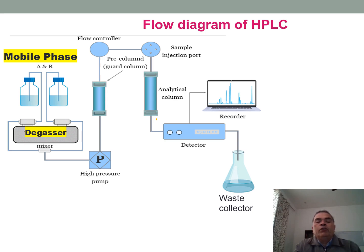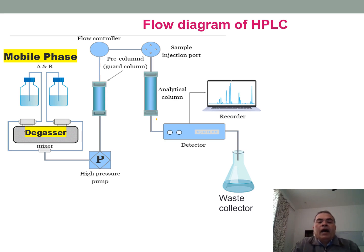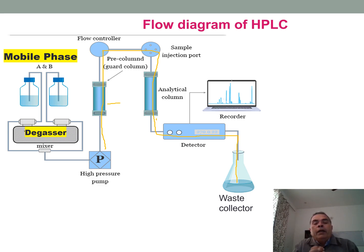Flow diagram: the mobile phase is a solvent or composition of different solvents. The mobile phase reservoir contains the mobile phase. The degasser removes dissolved gases from the mobile phase. The pump delivers the mobile phase at high pressure. It then flows to the guard column, then the flow controller, then the sample injection port, and then into the analytical column.